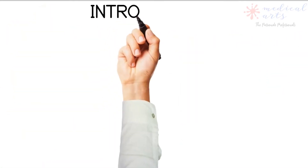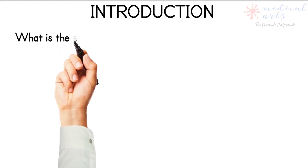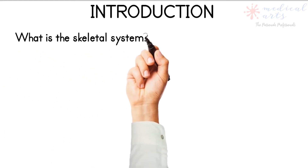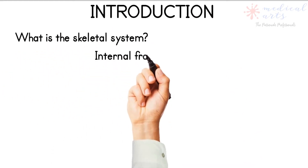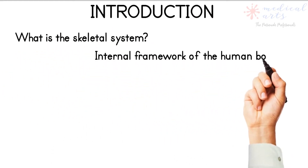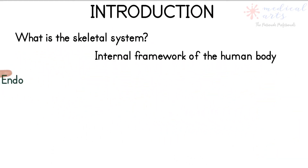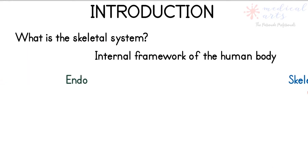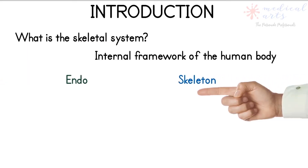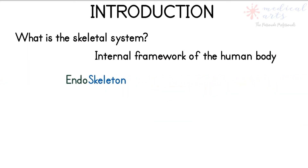What is the skeletal system? The skeleton is the internal framework of the human body, and another name for it is the endoskeleton. Endo means internal or inside, and skeleton here means the bones.